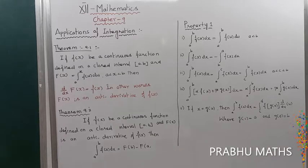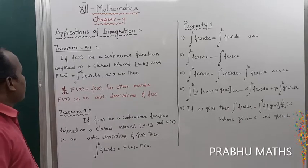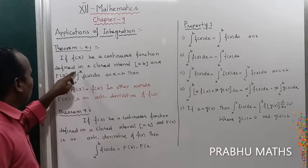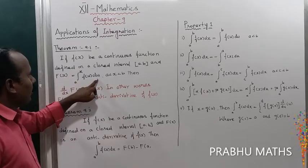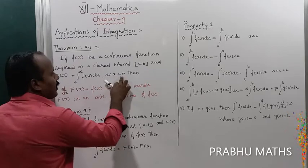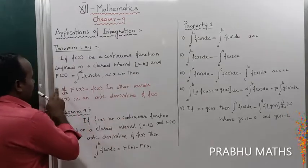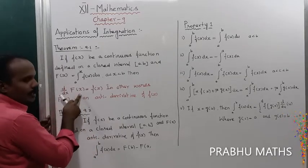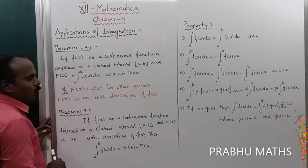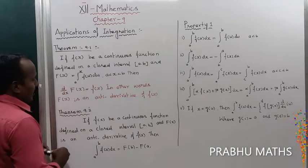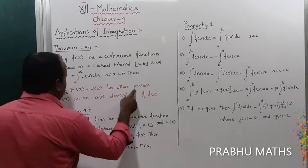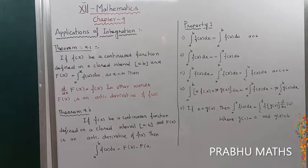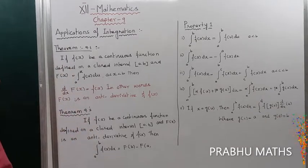Theorem 9.1: If f of x is a continuous function defined on the closed interval [a, b], and capital F of x is equal to the integral from a to x of f of u du, where a ≤ x ≤ b, then d/dx of capital F of x equals f of x. Capital F of x is called the anti-derivative of f of x. This is the First Fundamental Theorem of integration.